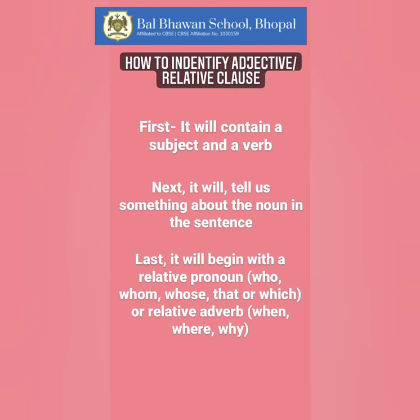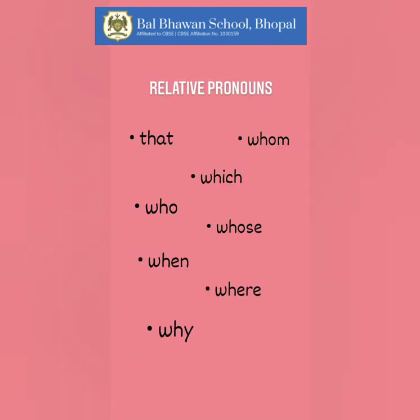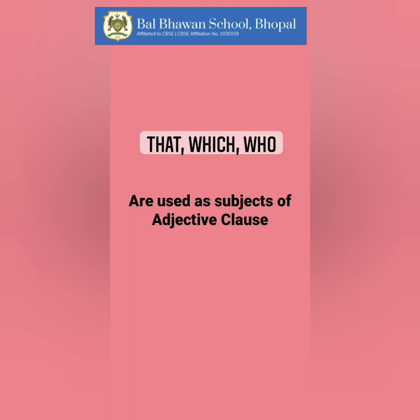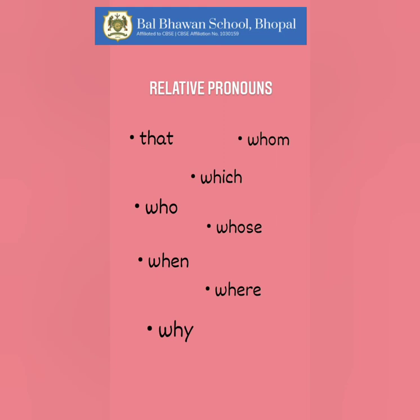Or a relative adverb: when, where, or why. An adjective clause starts with a relative pronoun or relative adverb — these are basically conjunctions of an adjective clause. Some of them could also be the subject of the clause. So 'that,' 'which,' and 'who' can be both subject and conjunction of an adjective clause. Whereas 'whom,' 'whose,' 'when,' 'where,' and 'why' are only connectors and not the subject of a relative clause.